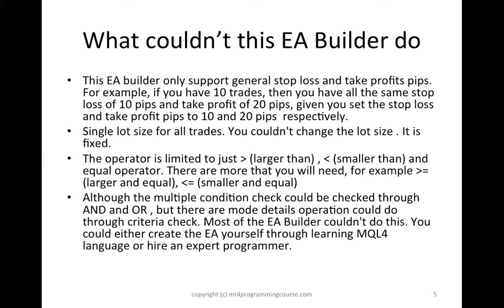On the other hand, there are several things this EA Builder couldn't do. First, it only supports a general stop loss and general take profit pips. This means if you have 10 trades, all of them will have the same stop loss and take profit pips. For example, if you set 20 pips for take profit and 10 pips for stop loss, all 10 trades will share those same values. Similarly, the same lot size is used for all trades — you can't set a different lot size for different trades.